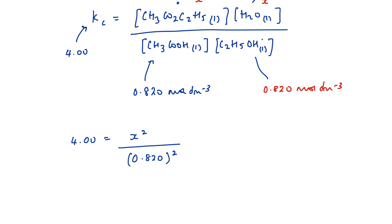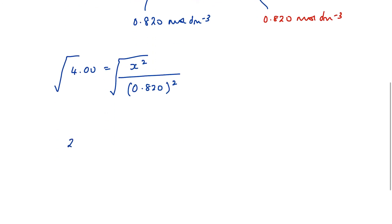If I square root each side, so square root that side, square root that side, I would have 2.